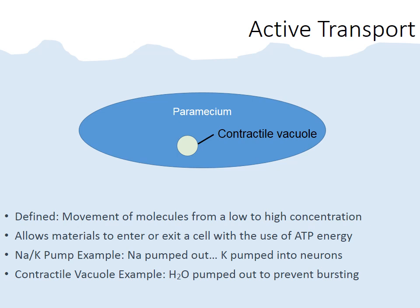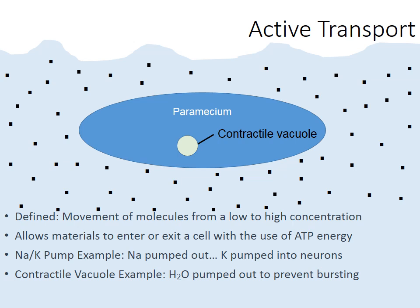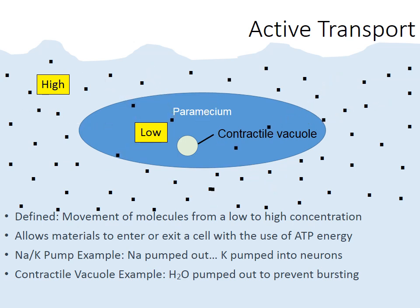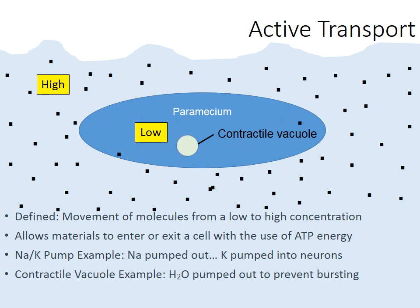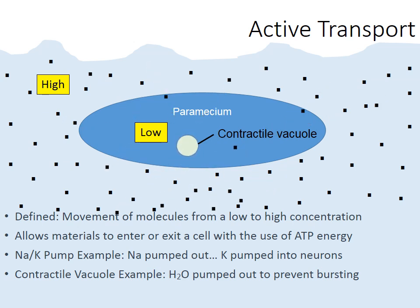Here's a drawing of the paramecium in its watery environment. The black dots represent water molecules. There's a high concentration of water outside the cell and a low concentration inside, so through simple osmosis water will diffuse into the paramecium — an example of passive transport. But watch what happens: the paramecium responds by using its contractile vacuole to pump the extra amounts of water from a low concentration to a high concentration, getting rid of the incoming water so it doesn't burst. This is how cells like paramecium can survive in a watery environment.